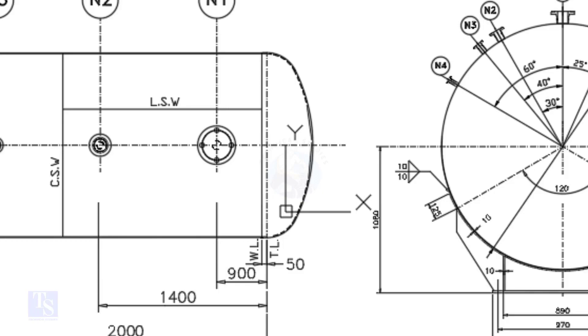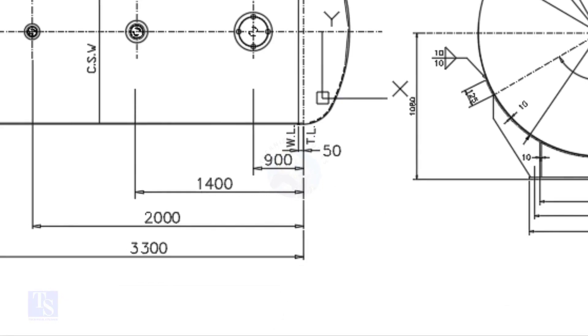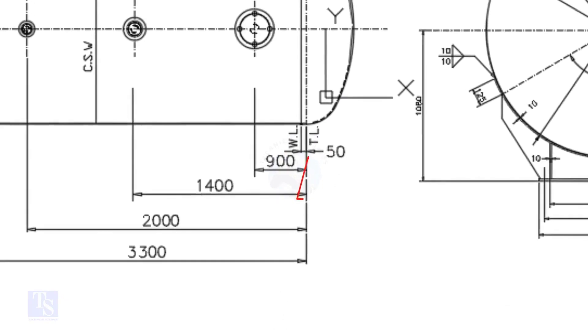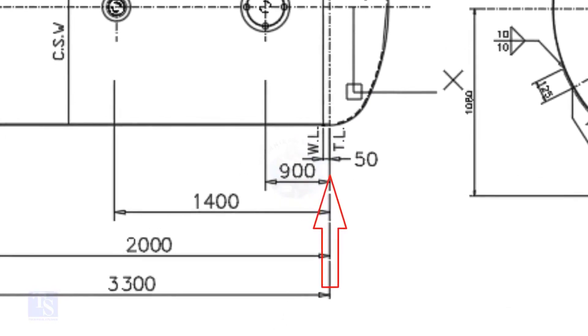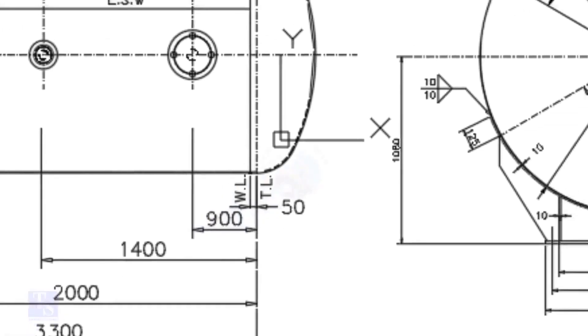In this drawing, the nozzle center distance is starting from the TL. In some drawings, you may see the nozzle center is given from the WL. So, before starting the marking, carefully see these things. Look at the nozzle orientation.